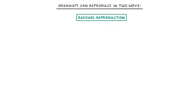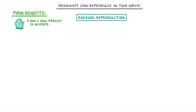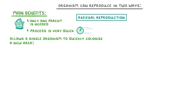Let's start with asexual reproduction. The two main benefits are that only one parent is needed, and the process is very quick. This allows a single organism to quickly colonise an entire new area.